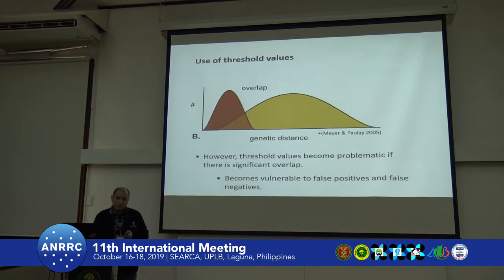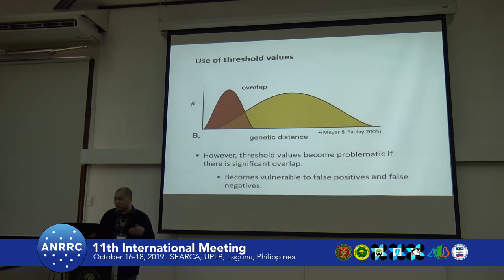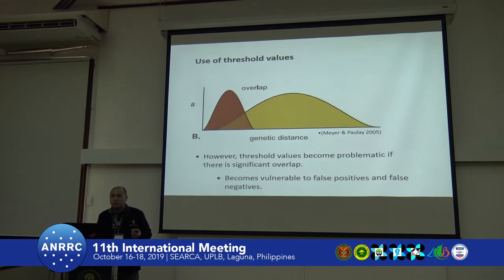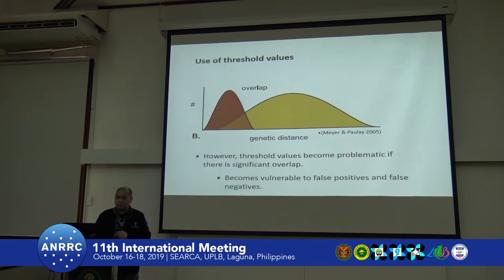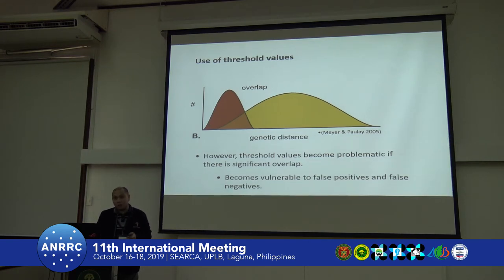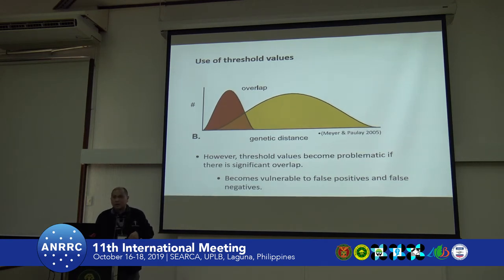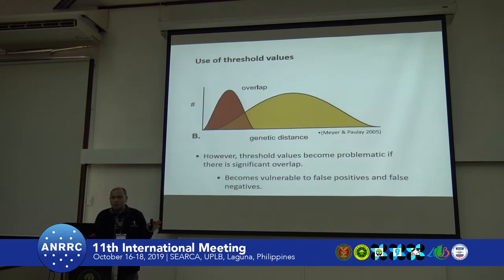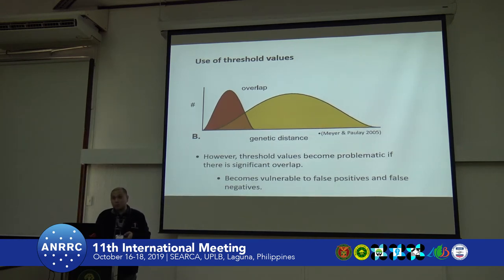Most of the time, there are overlaps — where the intraspecific distance is actually greater than the interspecific difference. When that happens, those taxa that fall within that overlap zone can be very problematic to identify. It's important to come up with as comprehensive a dataset as possible to identify these problematic taxa and figure out why there is an overlap. Is it because of wrong taxonomy? Is it because of cross-contamination in the lab? And in many databases like GenBank, such contaminations or wrong submissions do exist.